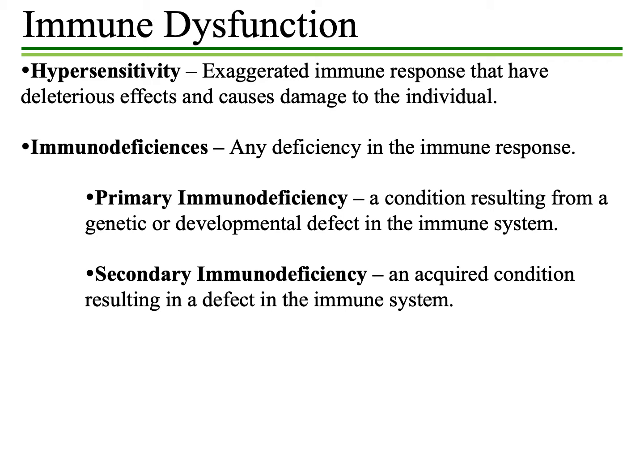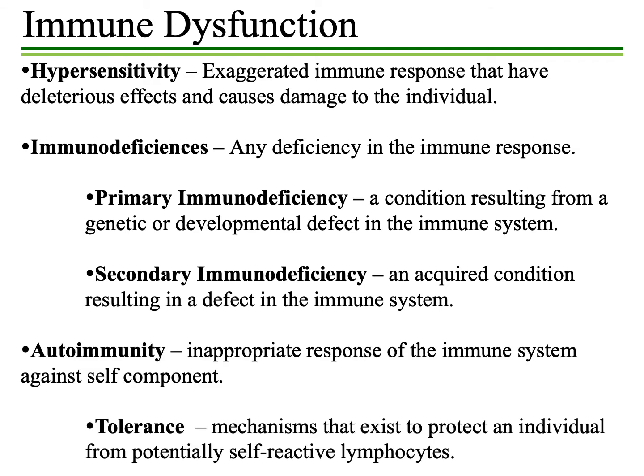The next category, which we will discuss in our third lecture, is immunodeficiencies — a situation where you have a deficiency in some aspect of the immune response, a failure of some or all parts of the immune system to function. This is divided into primary immunodeficiency, which results from a genetic or developmental defect, and secondary immunodeficiency, an acquired condition resulting in a defect or dysfunction of the immune system. Our lecture for today deals specifically with autoimmunity.